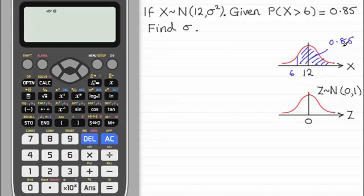That means that the area to the left of 6, we'll mark it in brown, that's going to be 1 minus 0.85 so that's going to be 0.15.